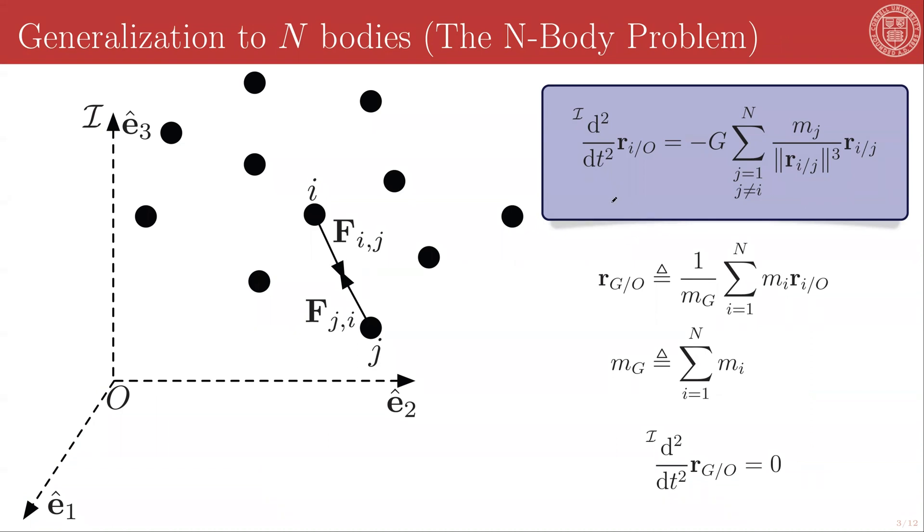In that case, we can once again apply Newton's second law to each particle individually. The second derivative of the position of particle i with respect to some inertially non-accelerating point O will equal the negative of the gravitational constant times the sum of the gravitational effects of each of the other particles mj in the collection. We sum over j equals 1 to N, excluding j equal to i, which is zero. By definition, a particle has no gravitational force on itself.